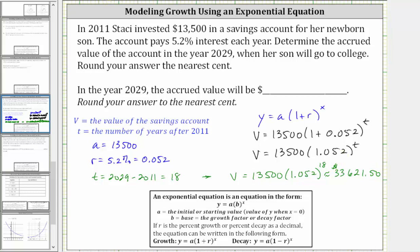So again, in the year 2029, the accrued value will be $33,621.50. I hope you found this helpful.